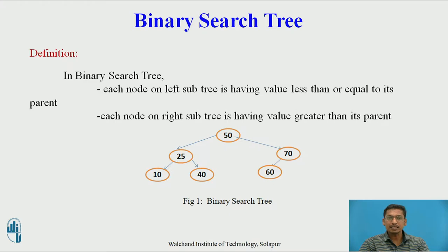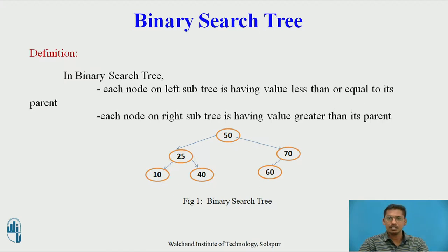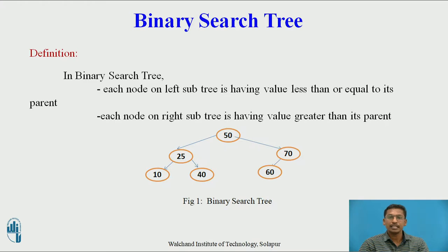First we will see the introduction of binary search tree. A binary search tree is actually a binary tree in which each node can contain maximum two nodes — or in other words, each node can contain either 0, 1, or 2 child nodes. In a binary search tree, each node on the left hand side is having value less than or equal to its parent, and each node on the right hand side is having value greater than its parent. This is the important property by which binary search tree differs from binary tree.